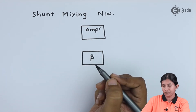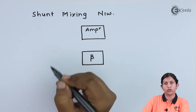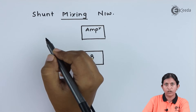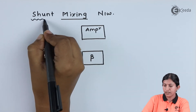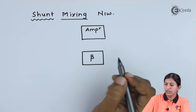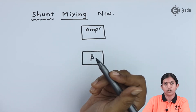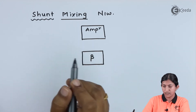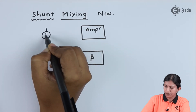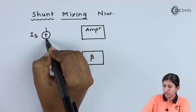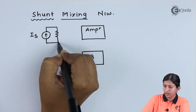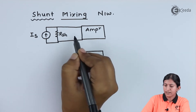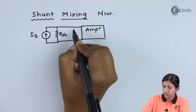Next is the shunt mixing network. The feedback network is represented by beta, which is the fraction of the output voltage applied back to the input. In shunt mixing, shunt means parallel. In a constant current source, the current value is divided while the voltage remains constant. We show the current source Is in parallel with the resistor Rsh, applied to the input. The feedback signal is connected in parallel with the input signal.